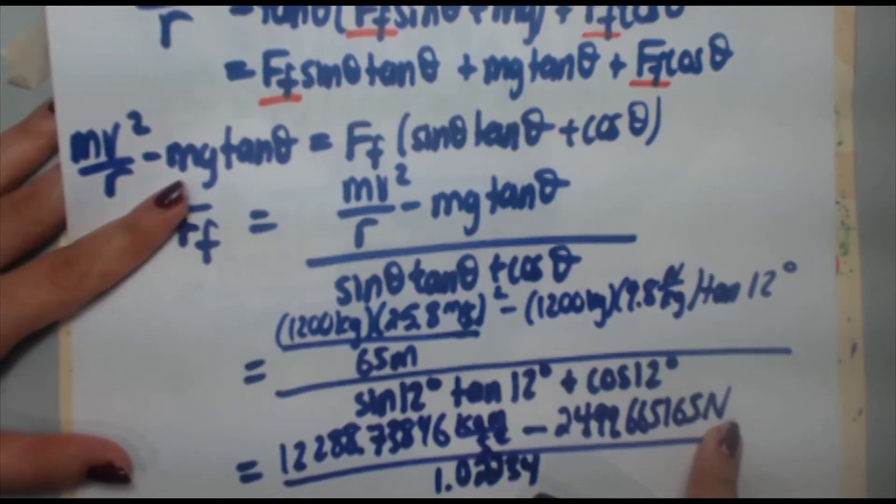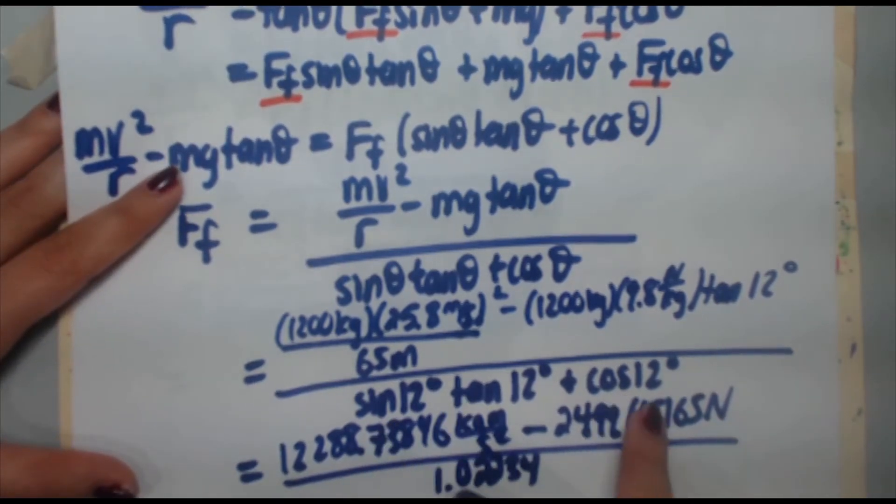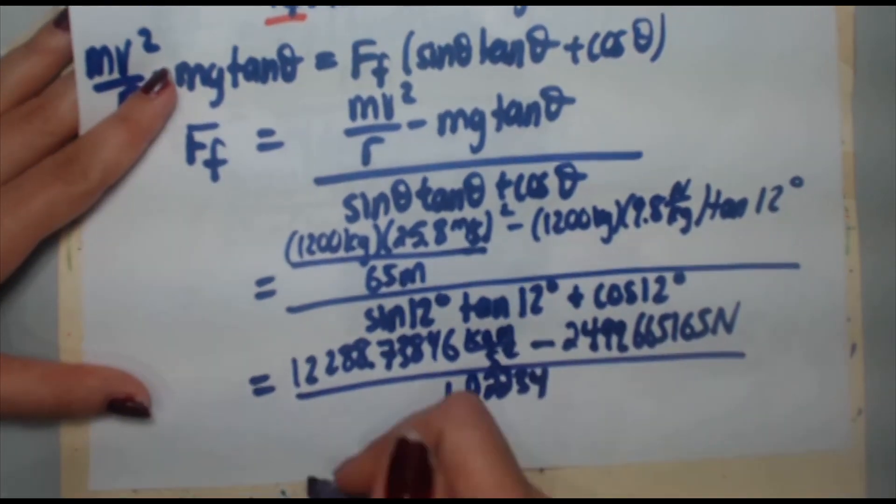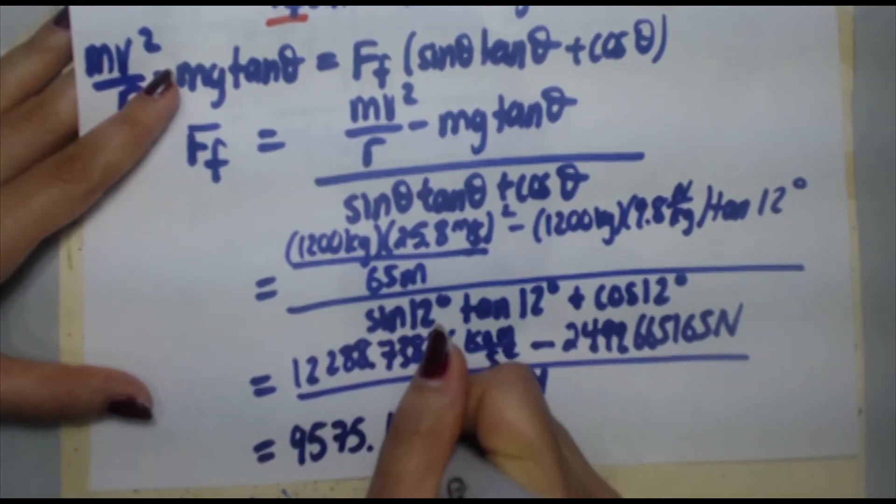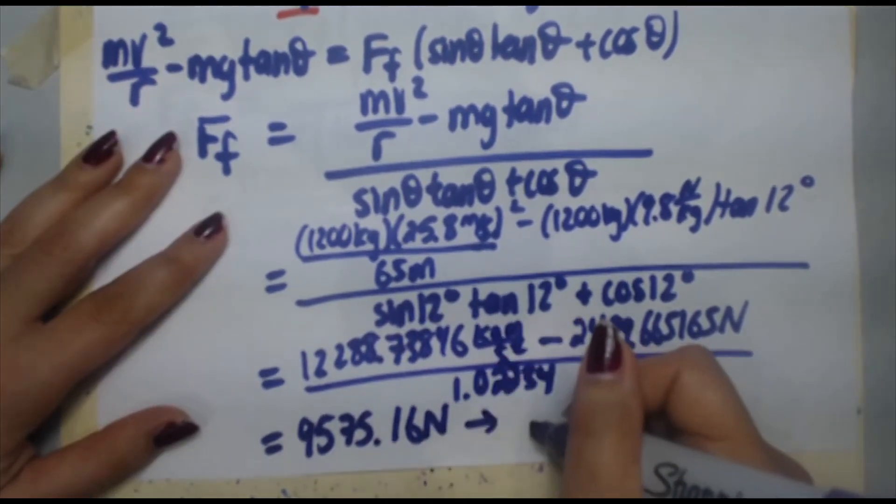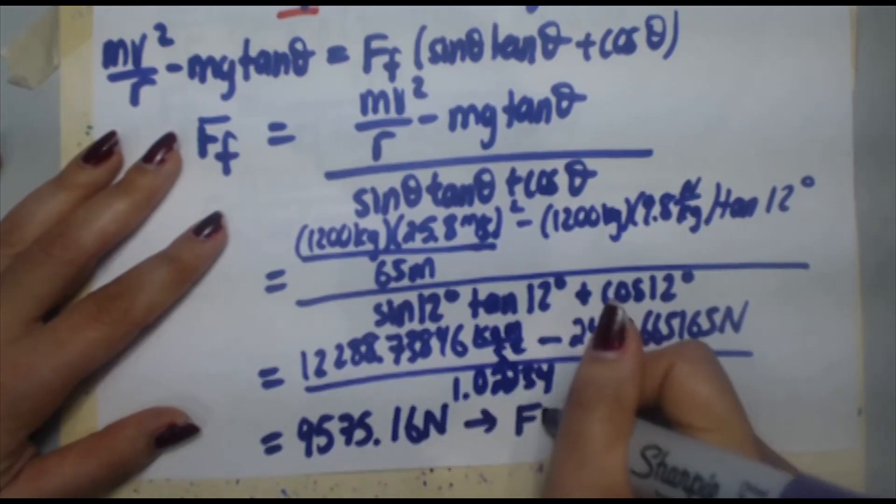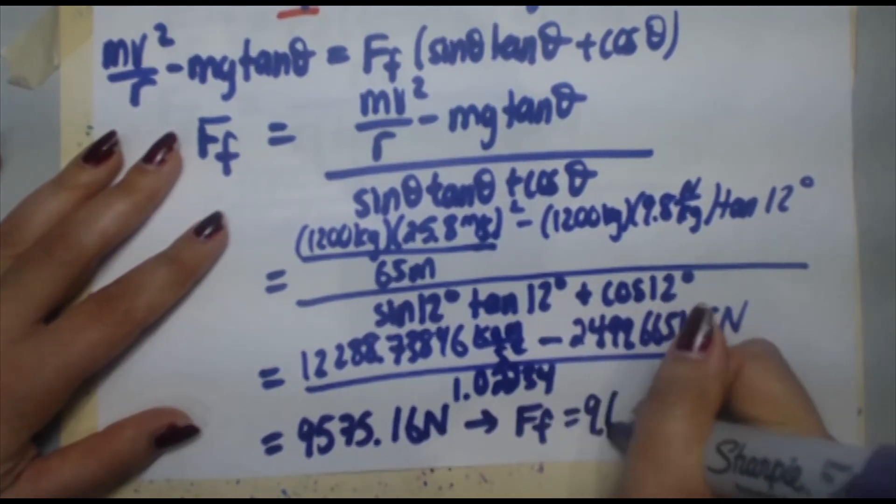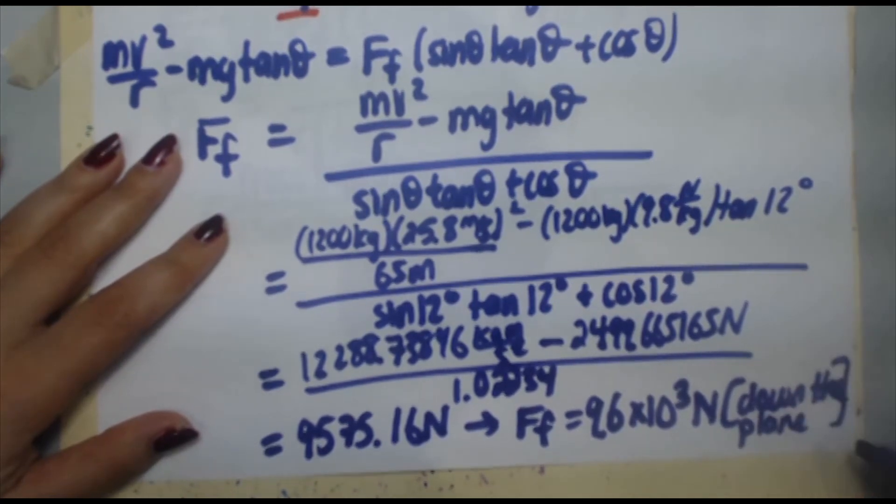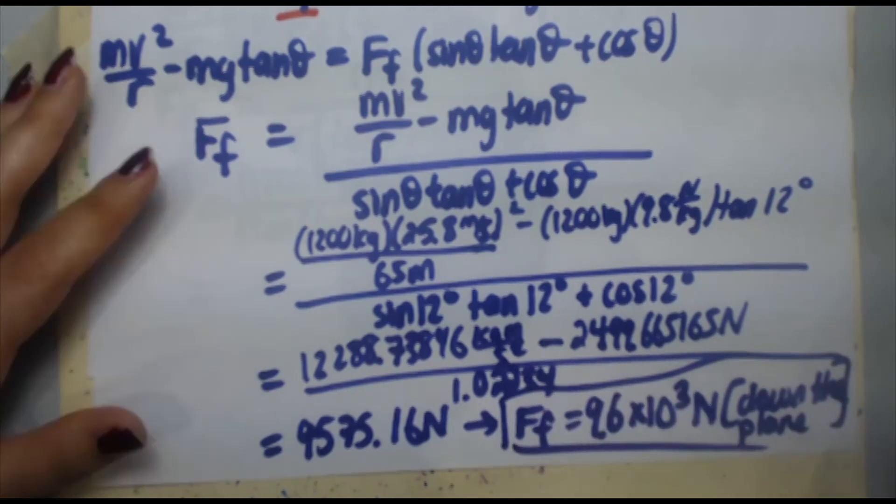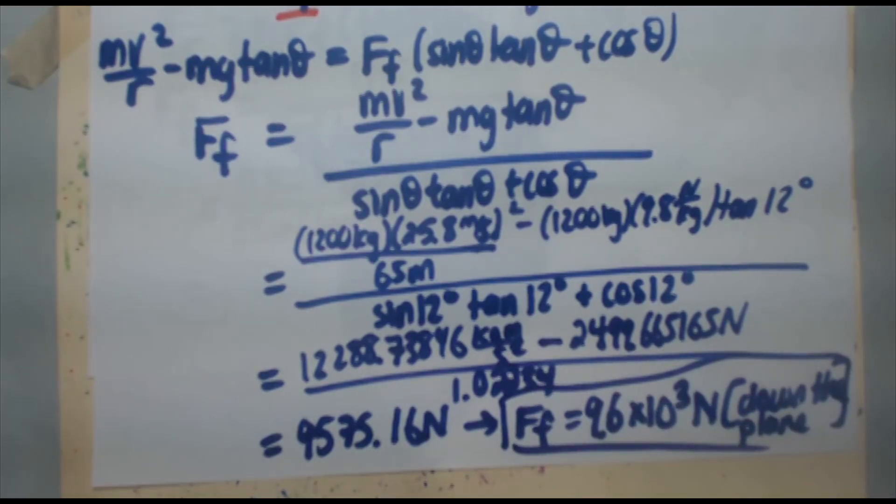Then do your top difference divided by the bottom number. You are going to get 9575.16 newtons. If we want to round that to the correct number of sig figs, which would be two, we get that the force of friction is 9.6 times 10 to the 3 newtons. And of course, this has to be going down the plane. I know it's going down the plane because the value came out positive. And because I defined positive to be down the plane in the original question, therefore, this has to be down the plane.